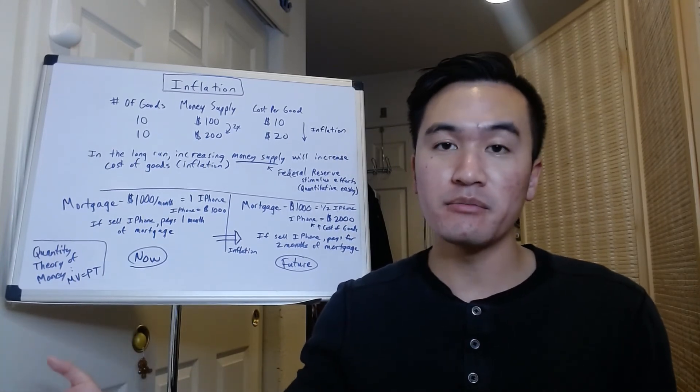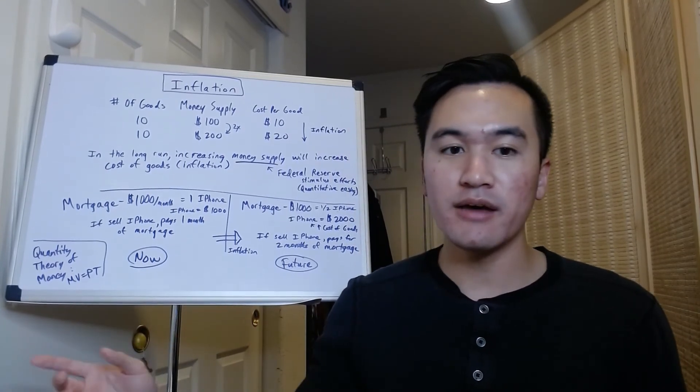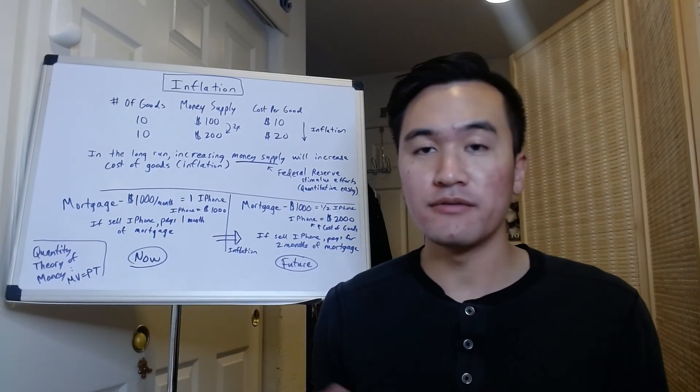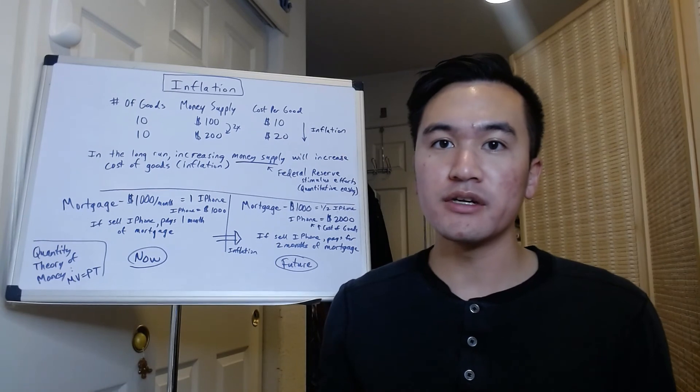You'll get this equation: MV equals PT. There are other factors involved like the velocity of money, and that's outside the scope of this video. But if you're interested in that, then google quantity theory of money.